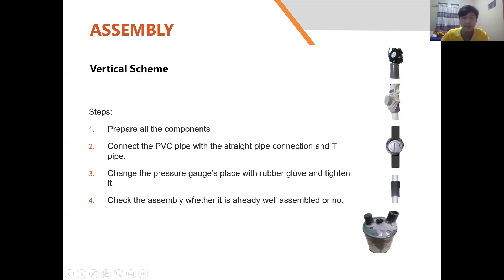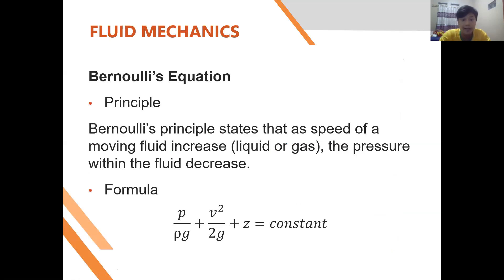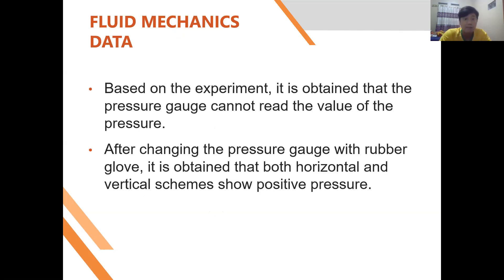The last assembly step is to check that everything is well assembled. The next session is the experiments. For fluid mechanics, we analyze the value of pressure at particular locations inside the pipe using Bernoulli's principle, which states that as the speed of a moving fluid increases — whether liquid or gas — the pressure within the fluid decreases. The Bernoulli equation formula is: P/ρg + V²/2g + z = constant, where P is pressure, ρ is density, g is gravity, V is velocity, and z is height.